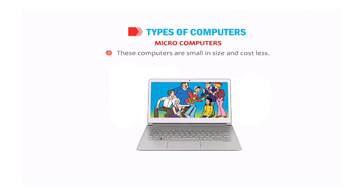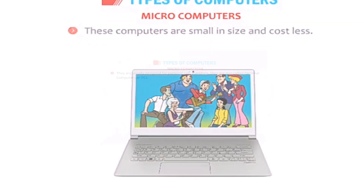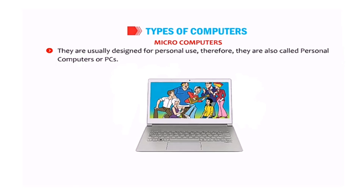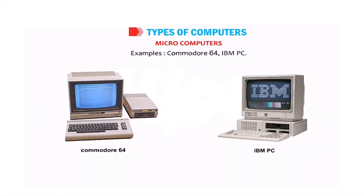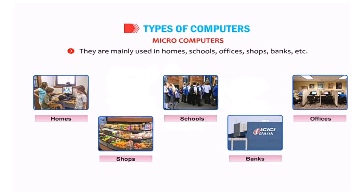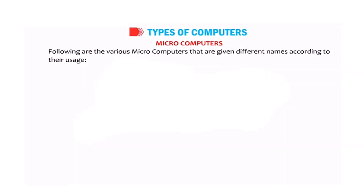Microcomputers are small in size and cost less. These computers are usually designed for personal use and are therefore also called personal computers, or PCs. Examples include the Commodore 64 and IBM PC. They are mainly used in homes, schools, offices, shops, banks, etc. Following are the various microcomputers given different names according to their usage.